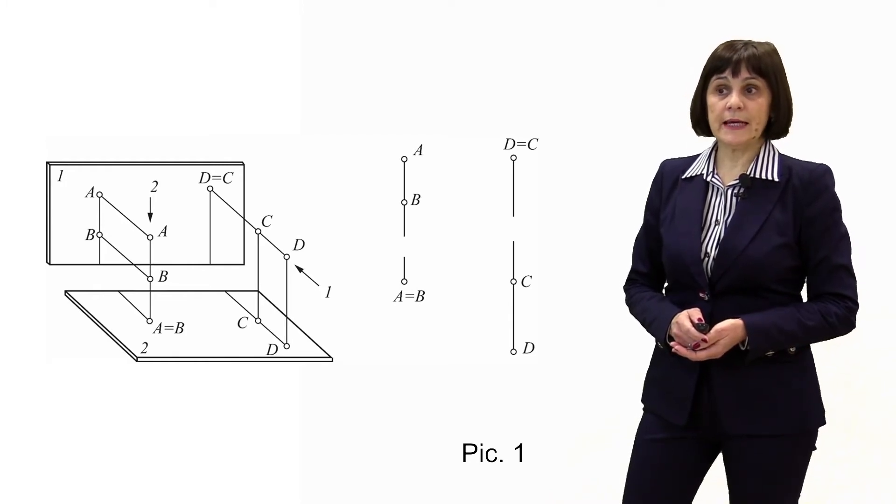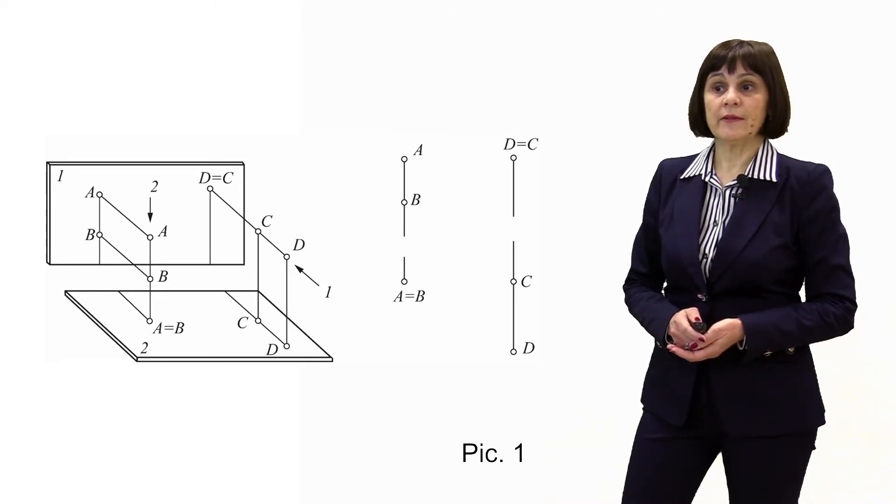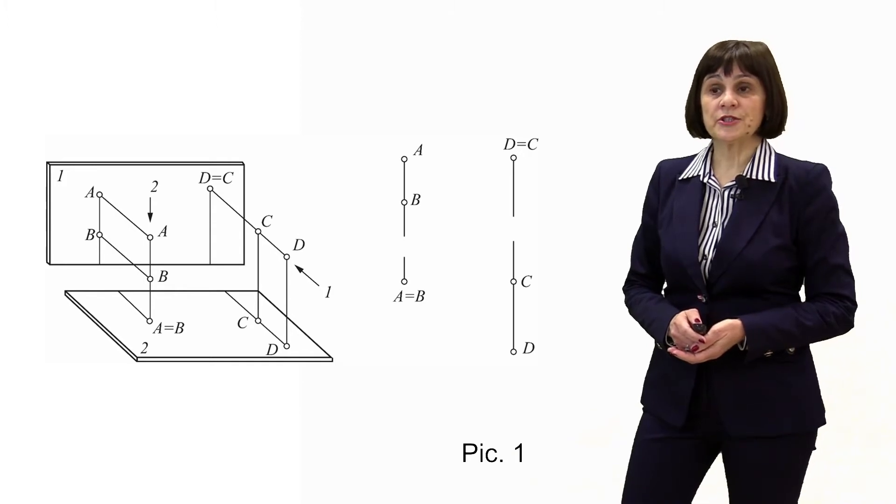In this case, the projections of invisible lines are represented by dashed lines with a thickness of 0.5 mm.